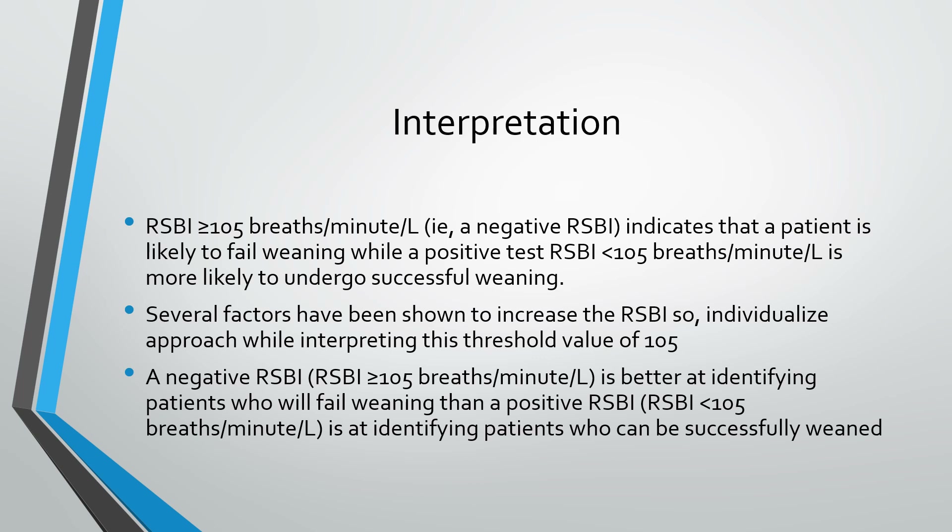Several factors have been shown to increase the RSBI, including a narrow endotracheal tube (tube size less than or equal to 7), female gender, sepsis and fever, supine position, anxiety, suctioning, and chronic restrictive lung disease. Thus, interpretation may need to be adjusted individually under these circumstances.